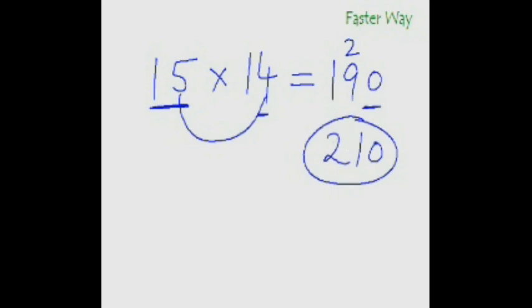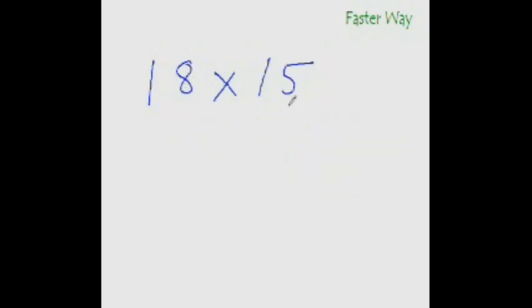Are you getting the point? What is 18 times 15? Add this digit to this entire number. 18 plus 5 is 23. Now for the last digit, find the product of this digit and this digit. 8 times 5 is 40. So carry forward 4, write 0 here. 23 plus 4 is 27. So the answer is 270.